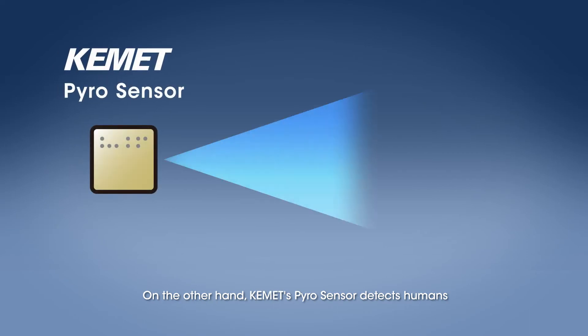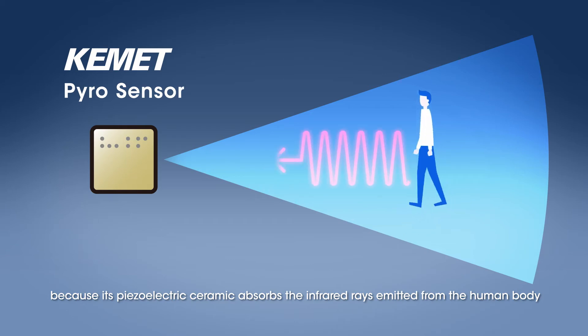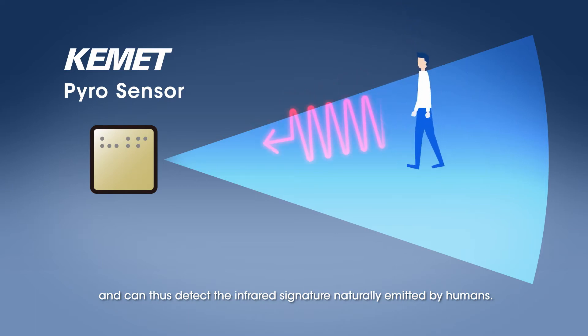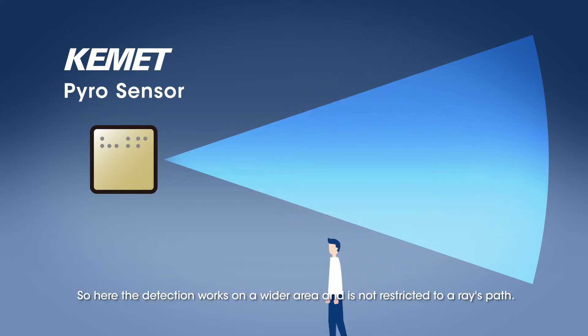On the other hand, KEMET's Pyro Sensor detects humans because its piezoelectric ceramic absorbs the infrared rays emitted from the human body, and can thus detect the infrared signature naturally emitted by humans. So here the detection works on a wider area and is not restricted to a ray's path.